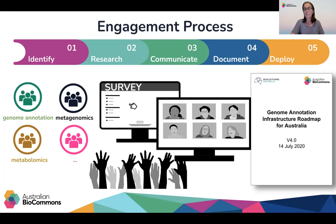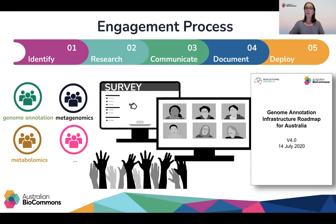In the fourth step, we document these issues and challenges and formalise them into an infrastructure roadmap. This details the community problems while also defining the potential solutions and deployments to resolve the challenges. This draft document is then shared with infrastructure providers, national and international experts, along with the community of practitioners to review prior to finalisation and essentially endorsement of that broader community. In the final step of the process, we identify solutions described in the roadmap that can be deployed for each community. These are established and deployed in an iterative process with hosting partner organisations first identified and then the deployment with collaborative testing and feedback from members of each community.